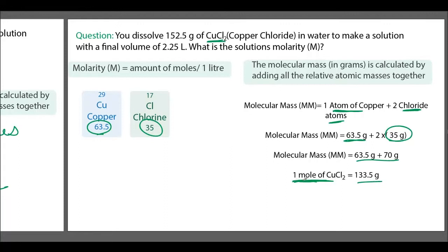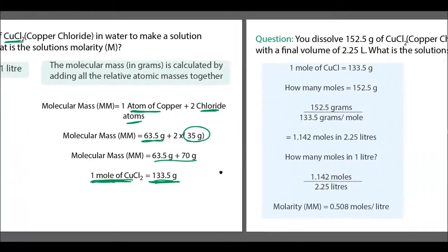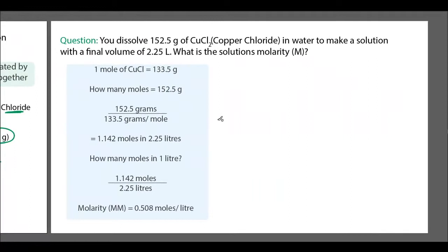So 133.5 grams is the molecular mass, and one mole of copper chloride equals 133.5 grams. The question asks: if we've dissolved 152.5 grams of CuCl₂ in 2.25 liters, what is the molarity? We know one mole of copper chloride equals 133.5 grams, and we have 152.5 grams — so we've got just over one mole.